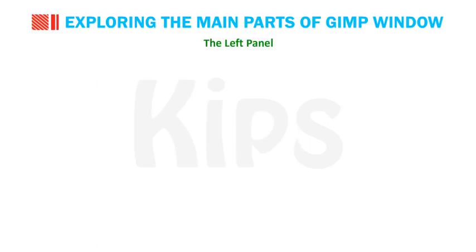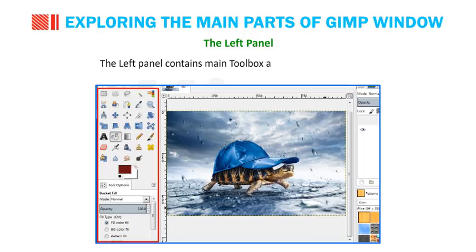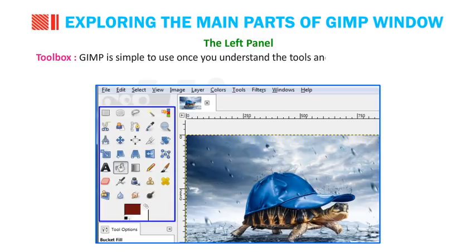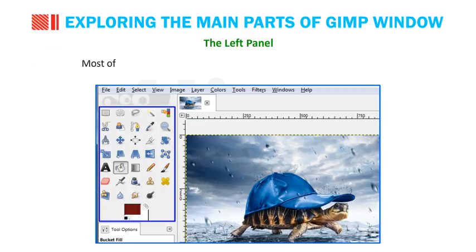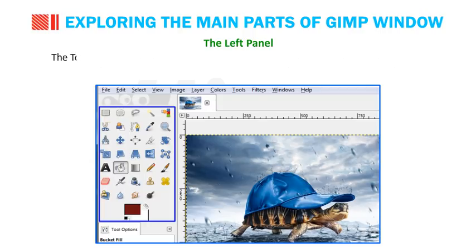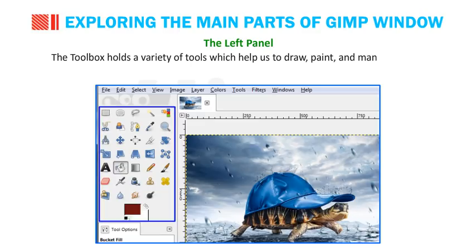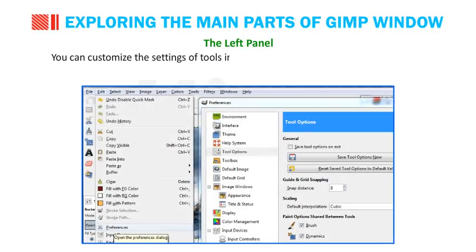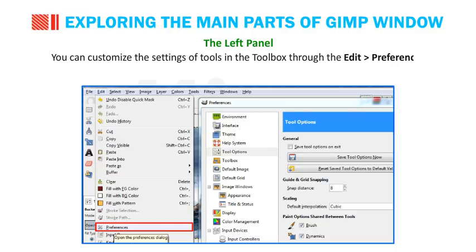The Left Panel contains the main toolbox and tool options dialogs. GIMP is simple to use once you understand the tools and how they can be used to make eye-catching images. Most tools can be activated by clicking on their icon in the toolbox. The toolbox holds a variety of tools to help draw, paint and manipulate images. You can customize the settings of tools through Edit, Preferences, Toolbox.